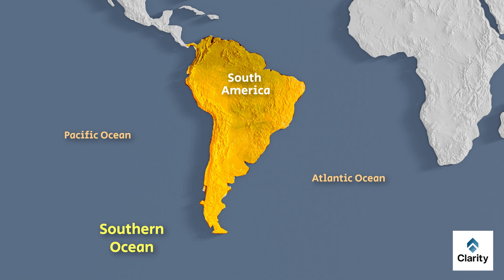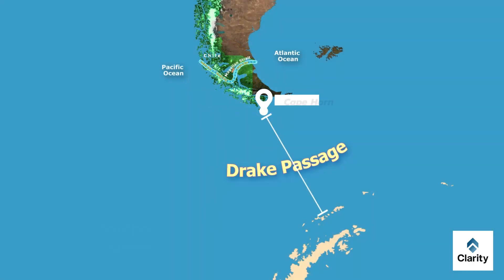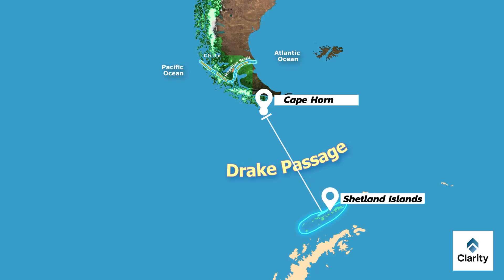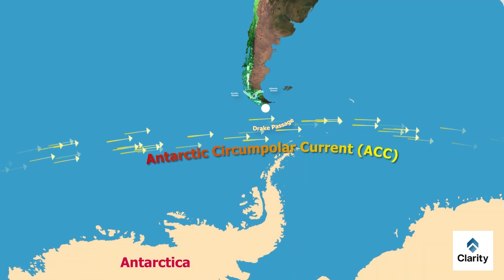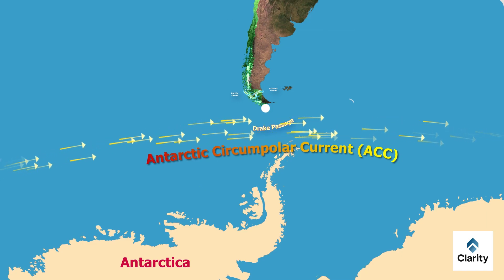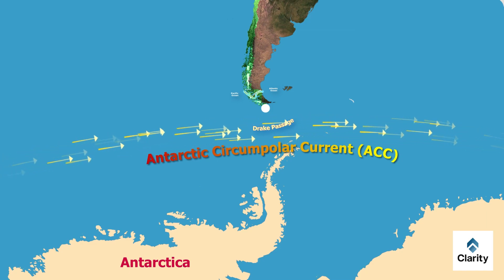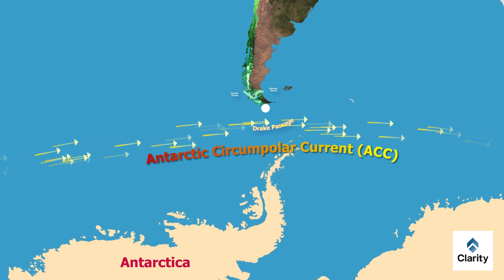The waters here are cold, rough and windy. Between Cape Horn in South America and the South Shetland Islands of Antarctica lies the Drake Passage. The Drake Passage is famous for some of the toughest waters in the world because of the strong Antarctic Circumpolar Current, or ACC. We will study this in detail in the next video.